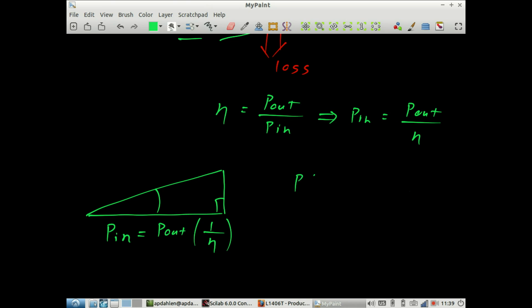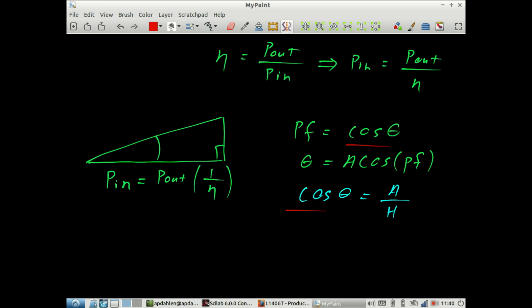You'll recall power factor is the cosine of θ, therefore θ is equal to the arc cosine of the power factor. Also from trigonometry, you'll recall that cosine of θ is equal to the adjacent over the hypotenuse. You can see how these two are related.